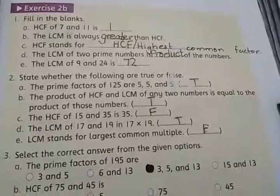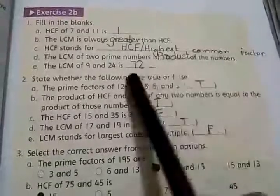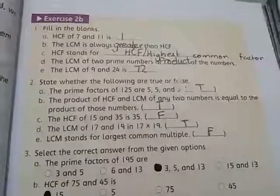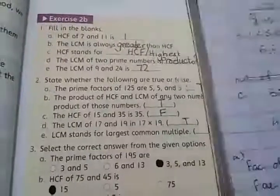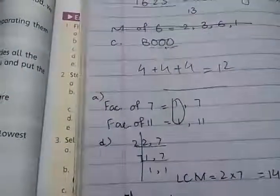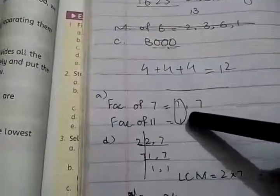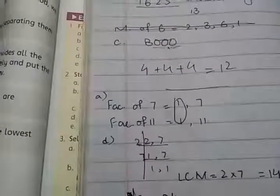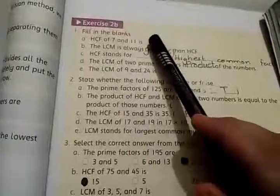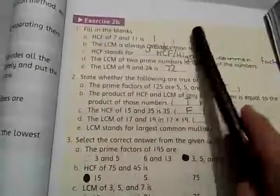Number A: the HCF of 7 and 11 is dash. Simply we write the factors of 7 and 11, and 1 is the only common factor of 7 and 11. So 1 is the highest common factor of 7 and 11.